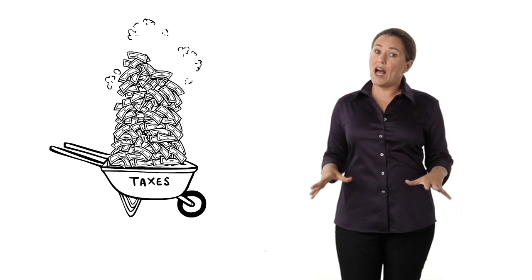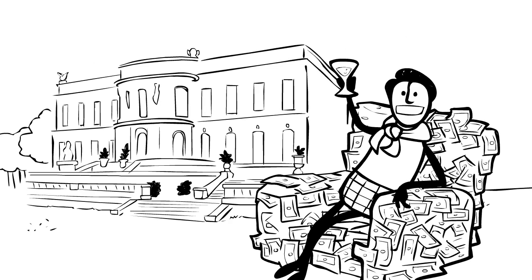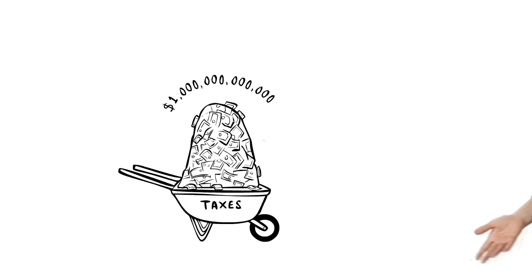Now, what we've got to work with shrinks a lot thanks to corporate tax loopholes and unprecedented tax breaks for the richest 1%. But even after those, we've still got over a trillion dollars. So if we're broke, what's happening to all that money?